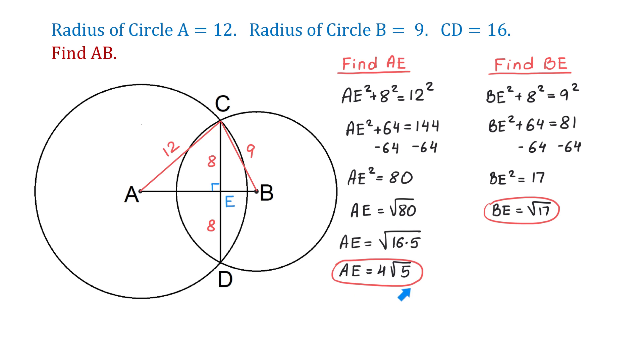So, we have both AE and BE, and now we can find AB. To find AB, we will add together 4 square root of 5 and square root of 17. If we use a calculator to approximate this answer, then AB will be approximately 13 units. I hope you enjoyed this video.